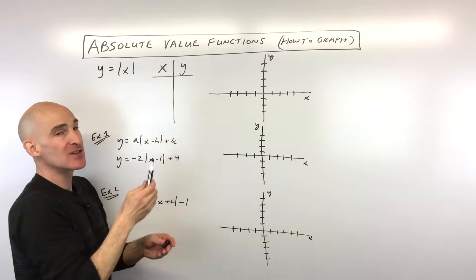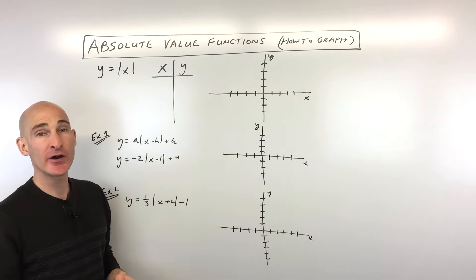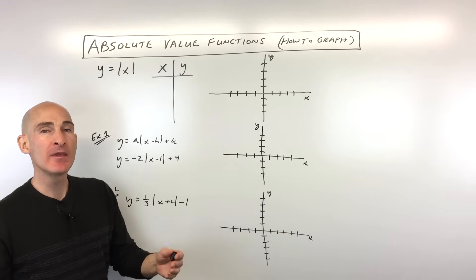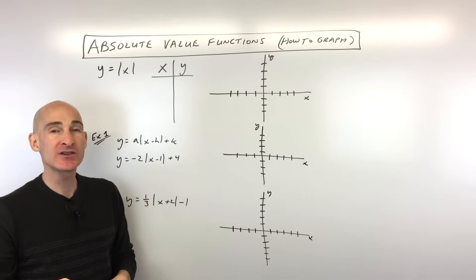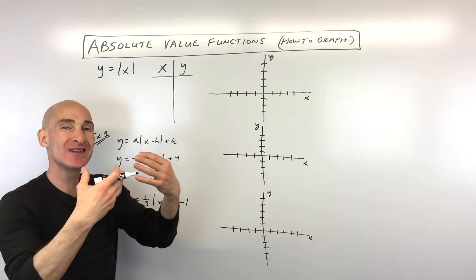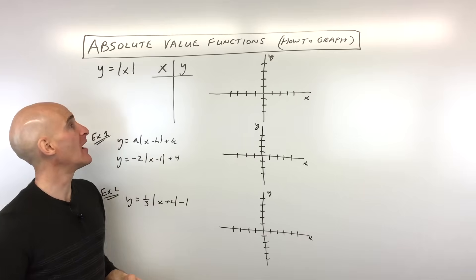So y equals absolute value of x. See those vertical bars? That tells us the absolute value. And what does the absolute value do? It takes whatever this quantity is inside of those absolute value bars, and after you simplify it, you always turn it into a positive number. So it's always a positive value.